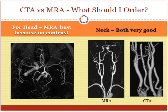A CTA and MRA are very, very similar. A CTA is a CT scan where they subtract everything off and you're left with just the flowing blood vessels, and they look really, really similar to one another.